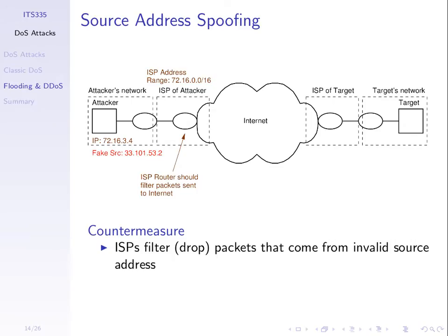A countermeasure against using a spoofed or fake source address is that ISPs filter or drop packets that come from invalid source addresses. Not all ISPs do that, though — it takes some effort on the ISP and router. So some do, some don't. Therefore there's still an opportunity for an attacker if they have an ISP that doesn't filter.